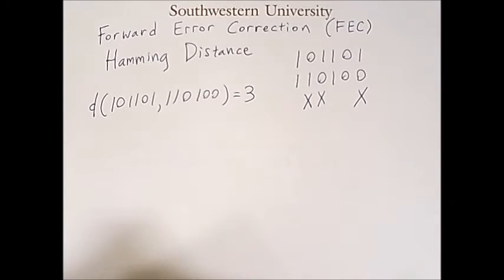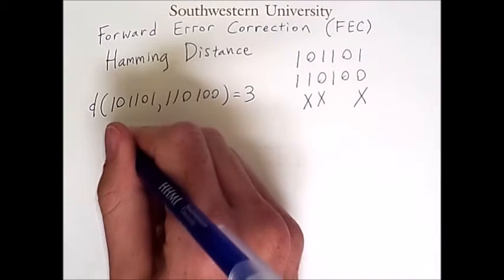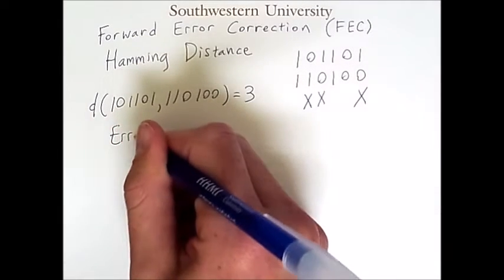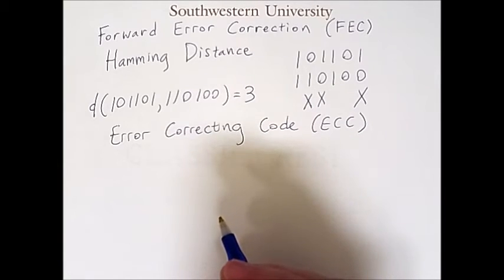Given this knowledge we can talk about forward error correction. Forward error correction requires the creation of an error correcting code. Specifically, both the sender and the receiver will have a dictionary of code words that look like the following.